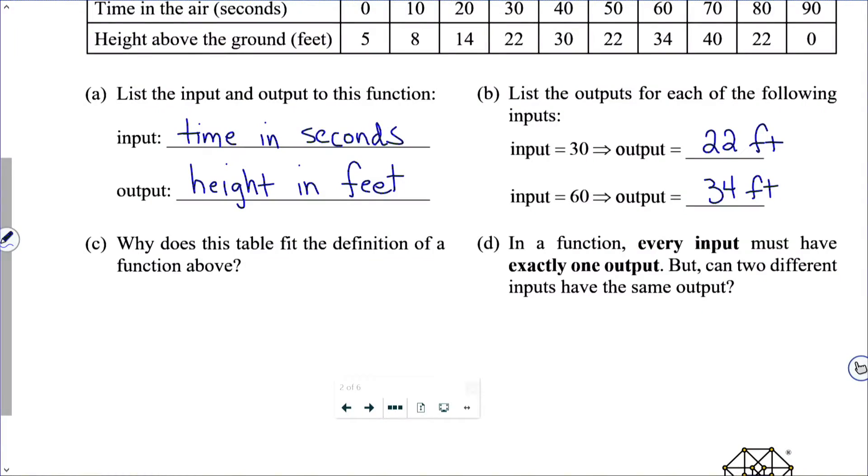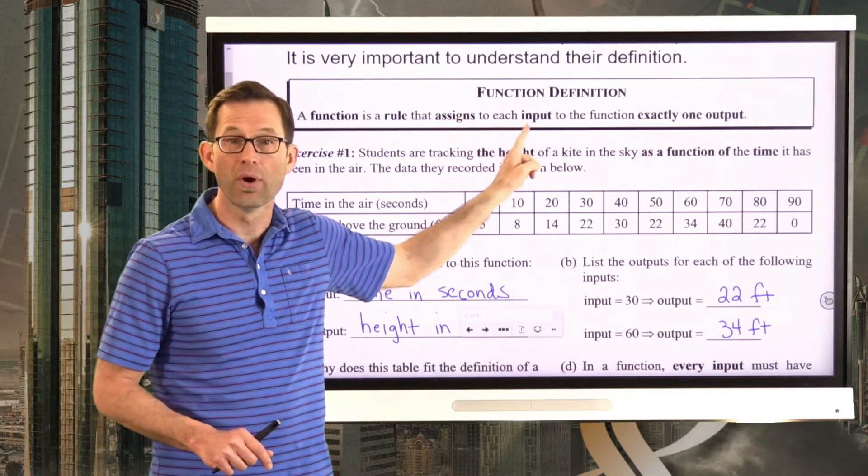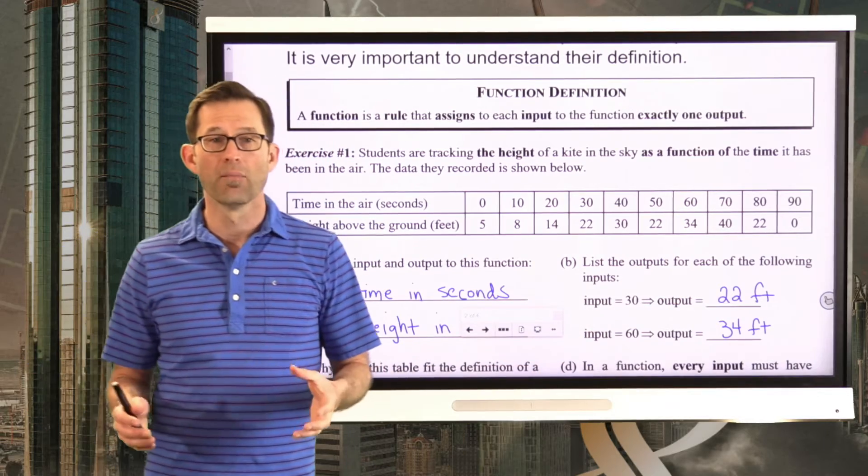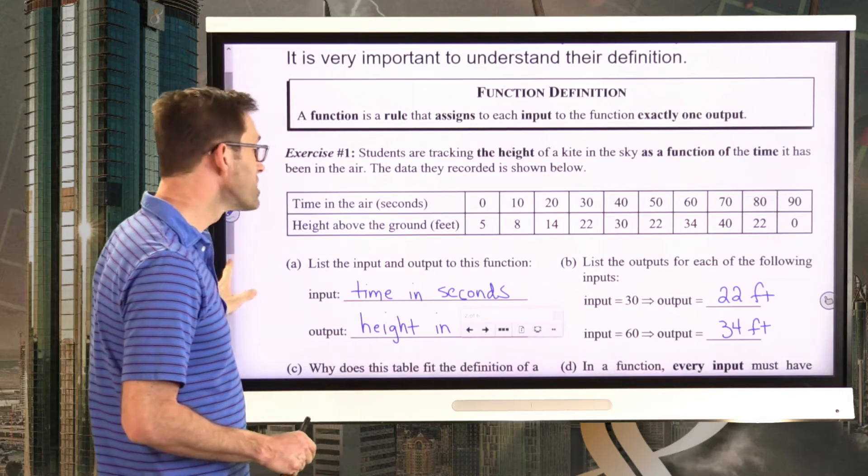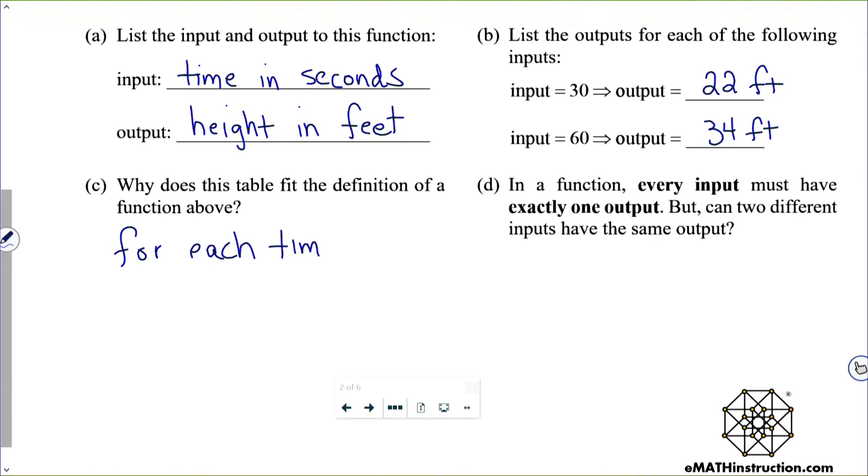Now, let's take a look at letter C. Why does this table fit the definition of a function above? In other words, we looked at the definition of what a function was. A function is a rule that assigns to each input, those are the times, exactly one output, those are the heights. So why does this table satisfy the definition of a function? Well, it's pretty simple. For every time input, there is only one height output.